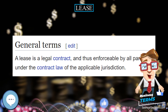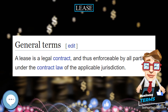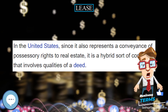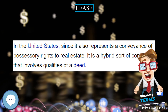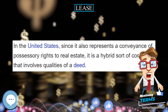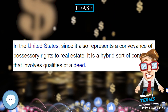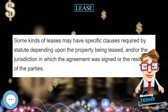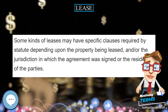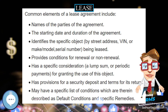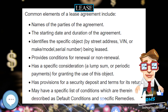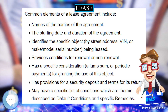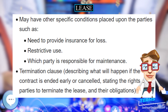The lessor is the legal owner of the asset, while the lessee obtains the right to use the asset in return for regular rental payments. The lessee also agrees to abide by various conditions regarding their use of the property or equipment. For example, a person leasing a car may agree to the condition that the car will only be used for personal use.